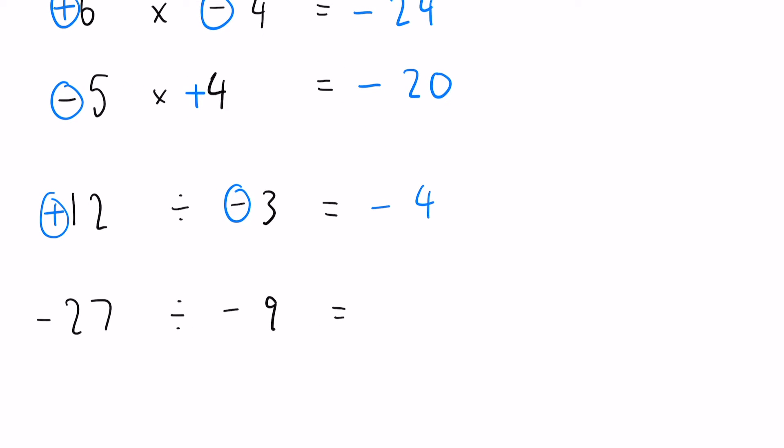Minus 27 divided by minus 9. So here we have double negative, we have two negative numbers so our answer is going to be positive because they're the same. 27 divided by 9 is 3, so that is our answer.